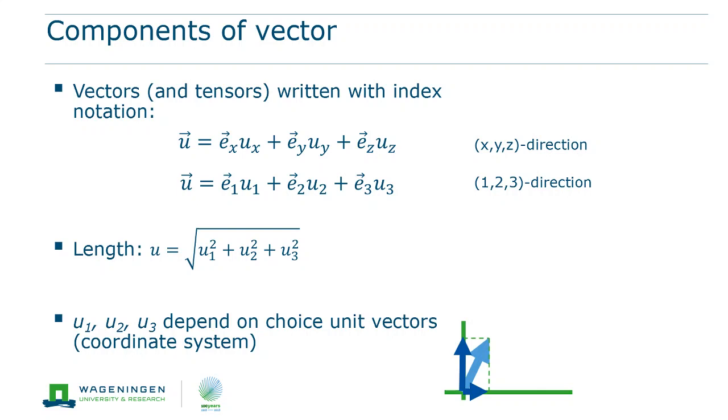Once we know the length of the components, the length of the vector itself is simply determined from the components using the three-dimensional equivalent of Pythagoras.